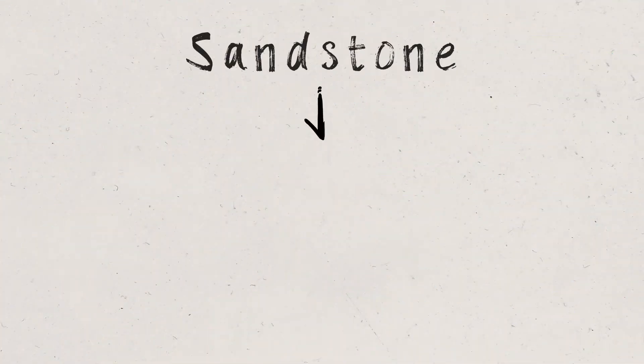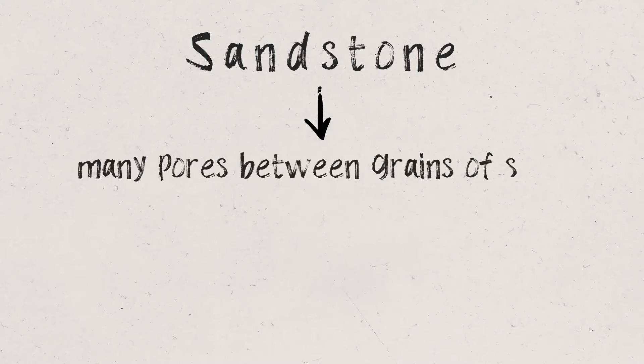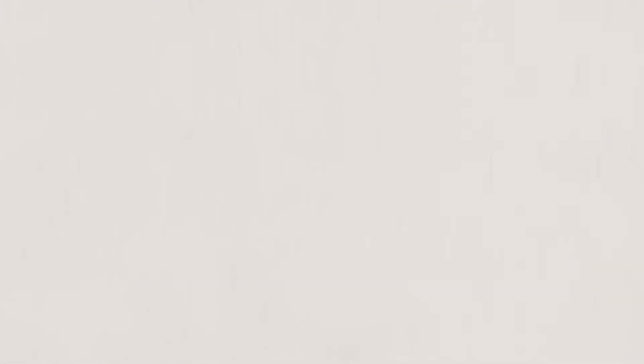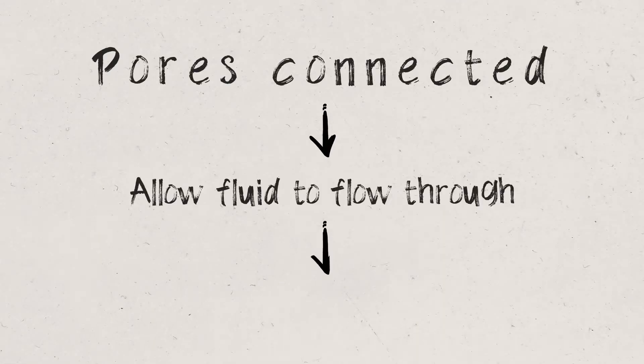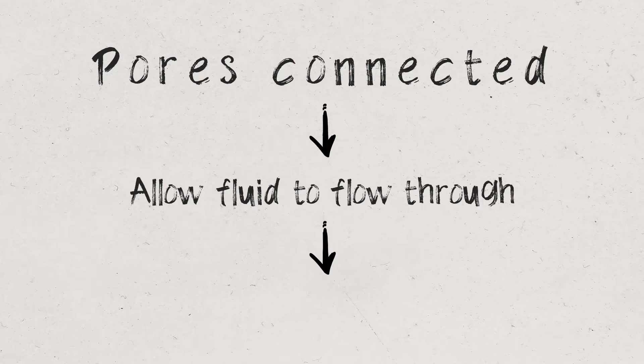Between all these grains of sand are tiny little gaps or pores. Because there are many of these pores within the rock, we can call this porous. And as these pores are connected and allow fluid to flow through it, we can also describe it as permeable. So this is our porous and permeable sandstone.